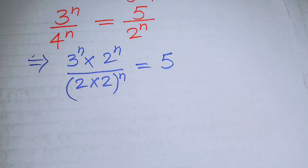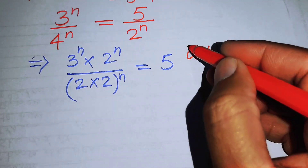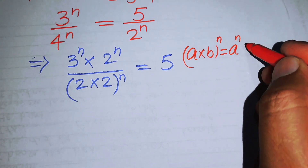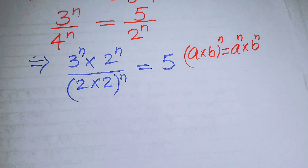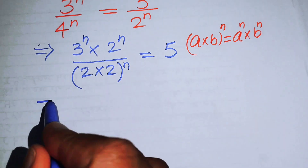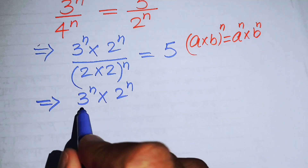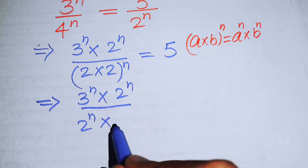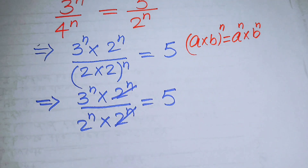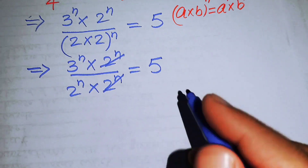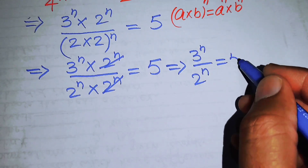We now use the exponential law: (a × b)^n = a^n × b^n. Applying this to the denominator, we get 3^n × 2^n over 2^n × 2^n equals 5. We can see that the 2^n terms cancel each other, leaving us with 3^n on the numerator side.